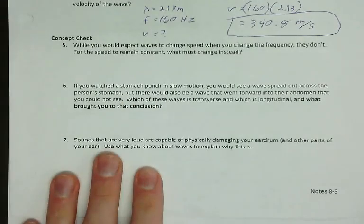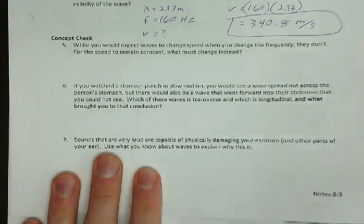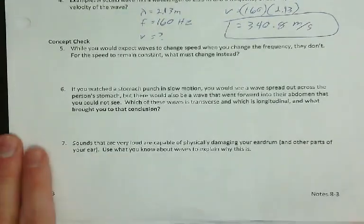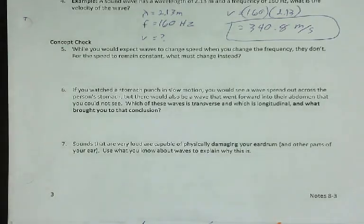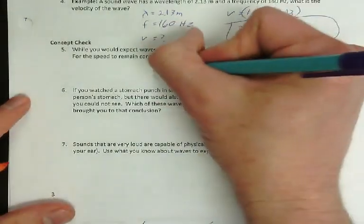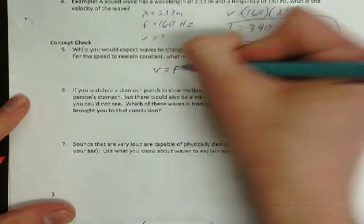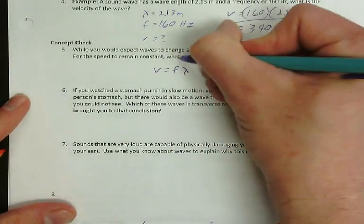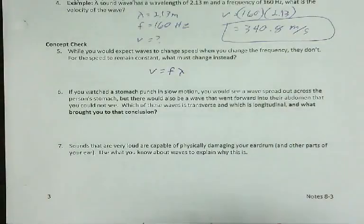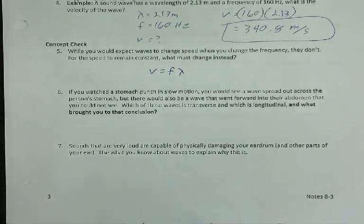The second one I wanted to look at is on notes 3B. While you would expect the speed of the wave to change when you change frequency, it doesn't. So why is that? V equals F lambda. You would think that if you made frequency larger, you would make the answer larger. If you take 10 times 2, you get 20.